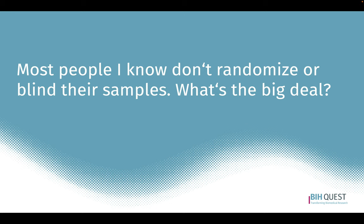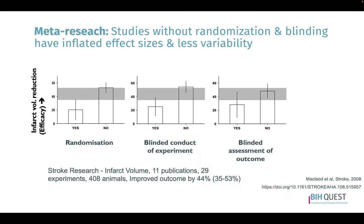Looking around your lab, many people don't randomize or blind their samples and say, 'What's the big deal? I would receive the same results.' Well, meta-research tells us otherwise. Studies without randomization and blinding have inflated effect sizes and less variability. Here is a result from stroke researchers from over 400 animals, who looked at infarct volume reduction after a certain treatment and compared whether randomization, blind conduct, or blind assessment was performed or not. The effect size is much more enlarged and less variable when these measures are not applied.